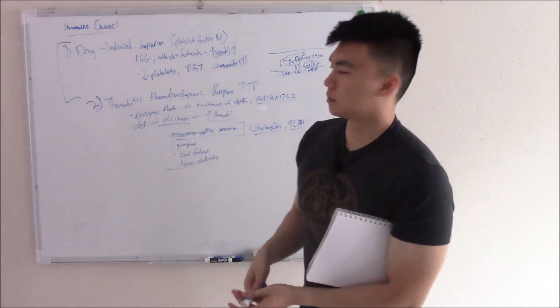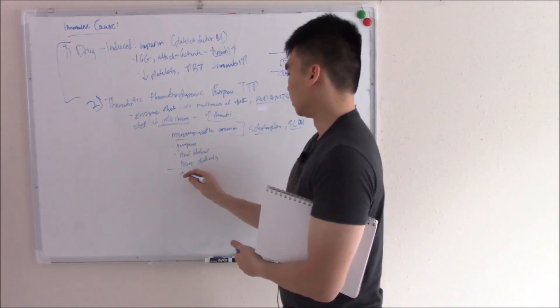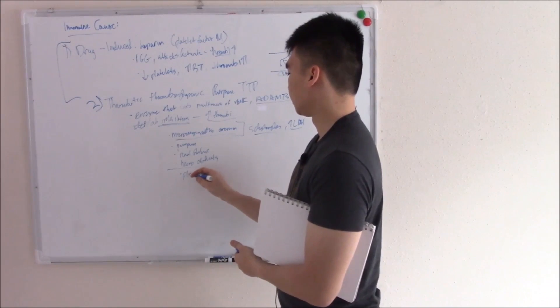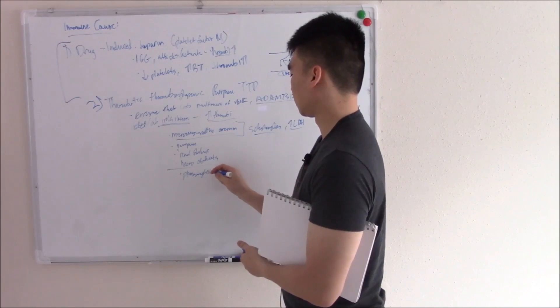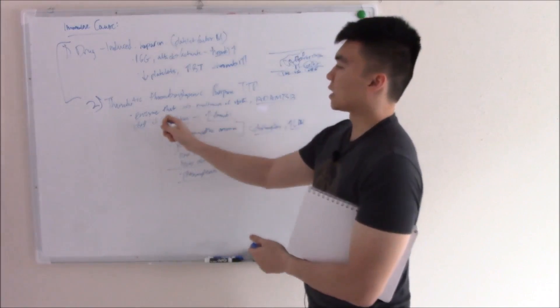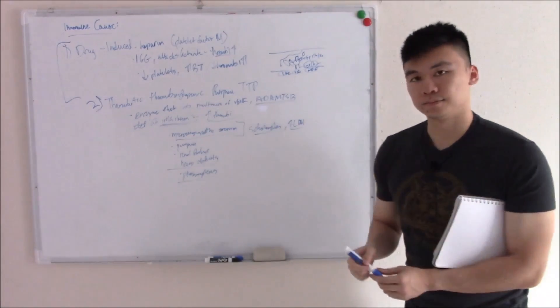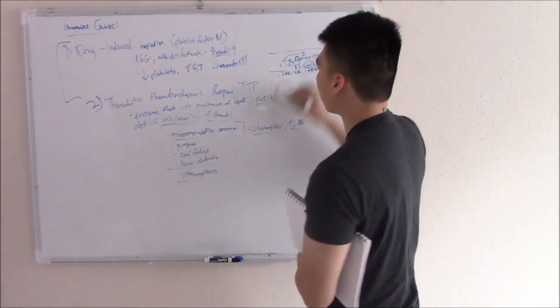Long ago, the mortality rate was pretty high, but now you can do plasmapheresis. And this works pretty well. Your plasmapheresis, you're taking away any antibodies that might inhibit your ADAMTS13. That's thrombotic thrombocytopenic purpura or TTP.